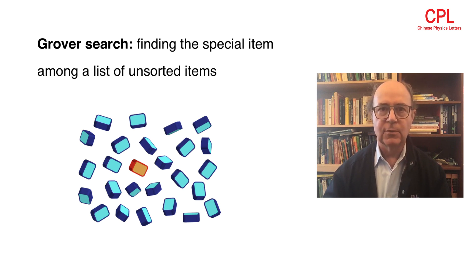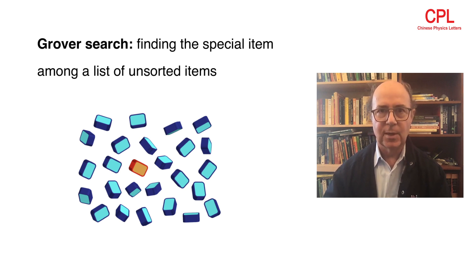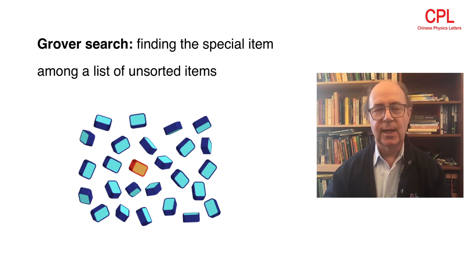It's one of the few cases in which quantum computers have demonstrably superior performance to classical computers in a problem that's fairly natural. The Grover problem is the problem where you have a list of n items, one of which is special but you don't know which, and you need to find that item.